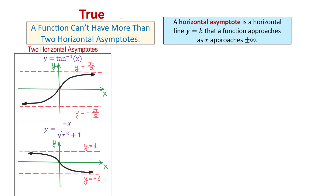Here are two functions that have two horizontal asymptotes. The first one is y equals inverse tangent of x. In this function, as x approaches positive infinity, the graph approaches the horizontal line y equals pi over 2. And as x approaches negative infinity, the graph approaches the horizontal line y equals negative pi over 2.